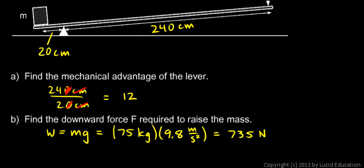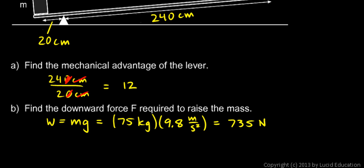Because we have a lever that gives us a mechanical advantage of 12, we can lift it with one-twelfth that much force. So the answer to part B is this number divided by 12: 735 newtons divided by 12.